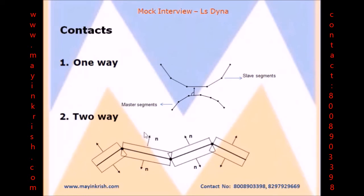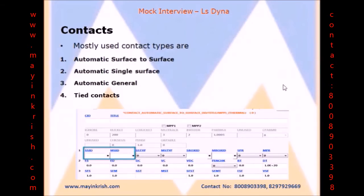Automatic surface-to-surface is the best example for two-way contacts. If you are using soft parameter, it's a constraint-based. If you are not using any soft parameter, it's a penalty-based.